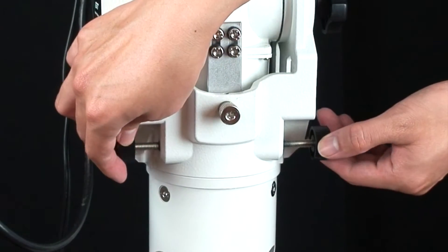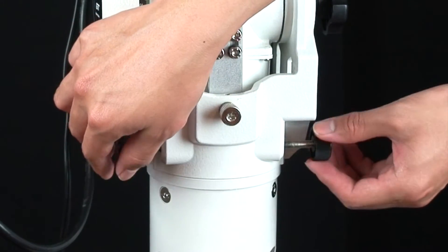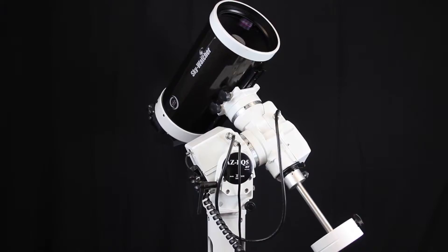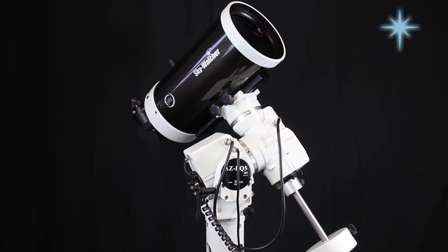For left and right adjustment, turn the two azimuth screws to push against the pin. Now your telescope is roughly pointing at Polaris.